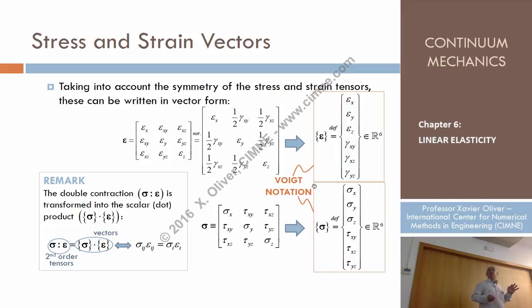They have a very interesting property, this notation, which is that whenever in any formulation the double contraction of sigma double contraction epsilon, so this tensor multiplied by this tensor, which means multiply one by one every position and sum them up. So sigma x times epsilon x plus one half of gamma xy times tau xy plus one half of the same. The product sigma double dot epsilon is equal to the dot product, the vector product of these two vectors.